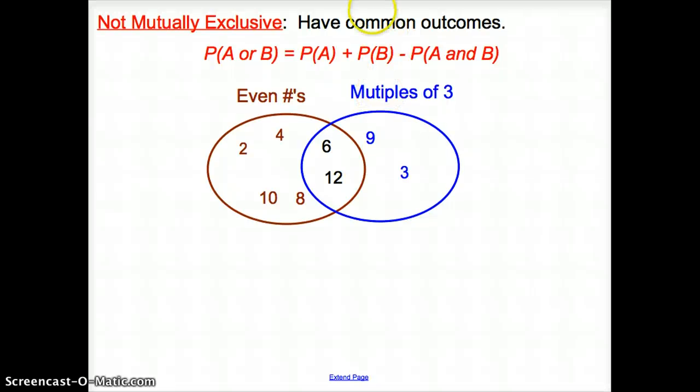Not mutually exclusive. They have common outcomes. So by definition, we're adding the probability of one event and two events, but now we are subtracting what they have in common. So let's take a look at even numbers and multiples of three.